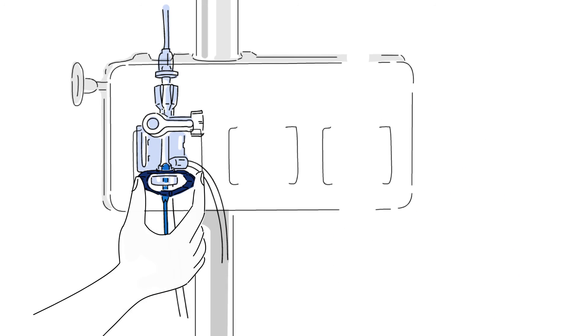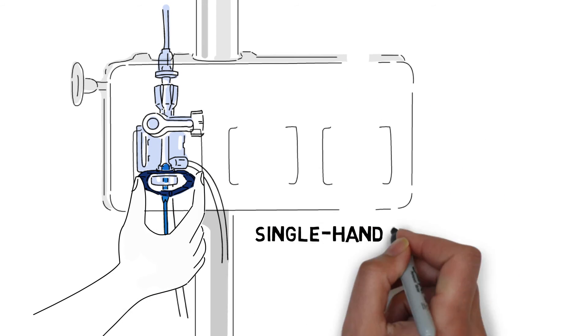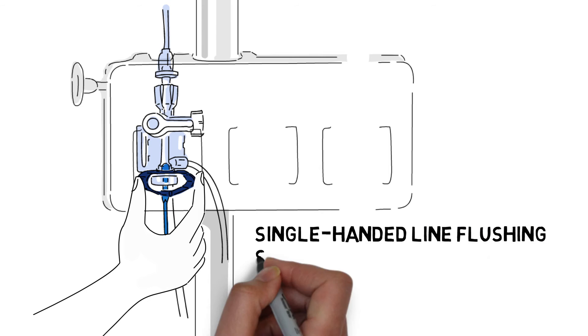Easy priming with single-handed line flushing and no risk of detaching the transducer from the pole mount.